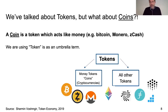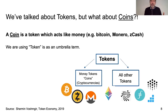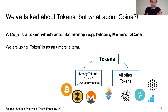So you have token as the umbrella term, and then you have money coins, or money tokens, or cryptocurrencies on the one hand, and on the other hand all other kinds of tokens — utility tokens or security tokens.